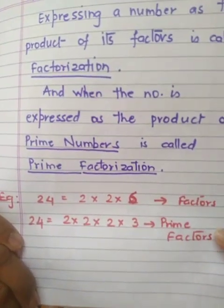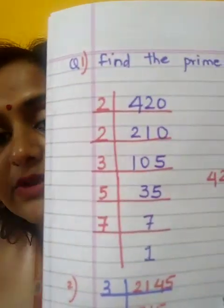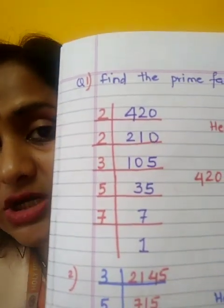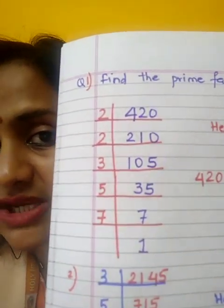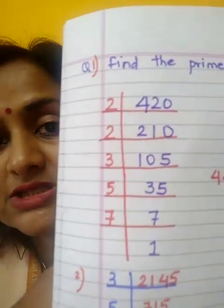Today we are going to understand this method to find the prime factorization of a given number. I have taken the example of 420. We have to start with the smallest prime number, that is 2. Children, if it is not divisible by 2, then you can start with 3, 5, 7, 11, 13, whatever. But you have to go in increasing order — that is the format.